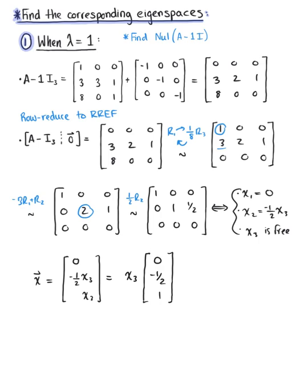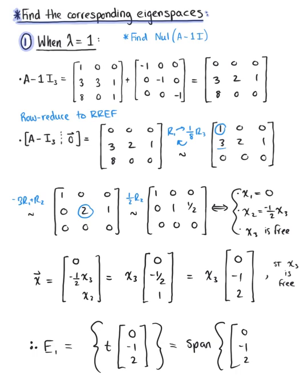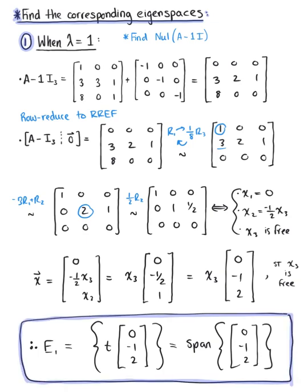There is nothing wrong with this form, but the vector has a fraction. We can fix this by multiplying by the least common denominator, giving us the equivalent form: x sub 3 times the vector 0, negative 1, 2. So the eigenspace e sub 1 is the set of all scalar multiples of the vector 0, negative 1, 2, which we can write as the span of {0, -1, 2}.